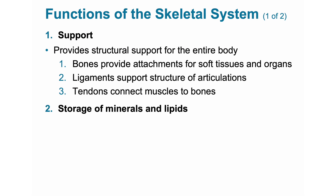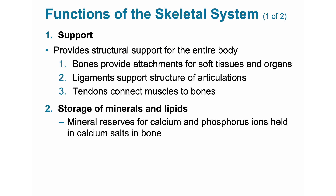2. Storage of minerals and lipids. Bone matrix, or osteoid, is made from calcium salts and phosphate, called hydroxyapatite. The calcium salts of bone serve as a valuable mineral reserve that maintains normal concentrations of calcium and phosphate ions in the body fluids. When blood calcium levels drop too low, the bone matrix can be broken down to release calcium into circulation, returning blood calcium levels to normal. Conversely, when blood calcium levels are elevated, the excess calcium can be removed from the blood and deposited into new bone matrix. Thus, the bone matrix serves as a place to store and retrieve minerals such as calcium and phosphate, whose stores can be drawn upon when needed.